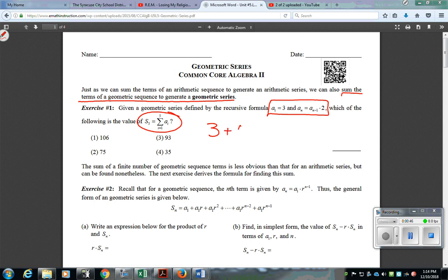So, the next number will be 6, then 12, then 24, then 48. So if we go ahead and add all these numbers together, we're going to end up getting choice 3, which is 93. So you're still finding the sum, but the terms you're getting are found by multiplying or dividing.